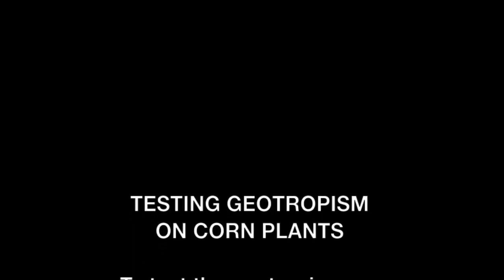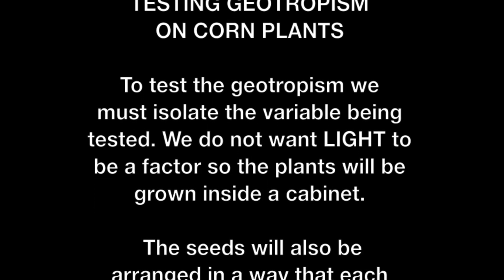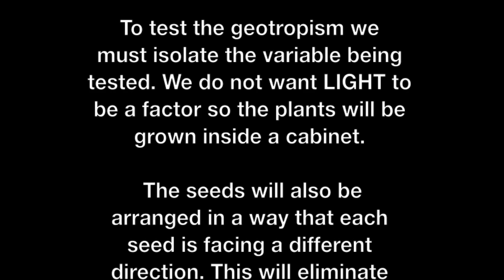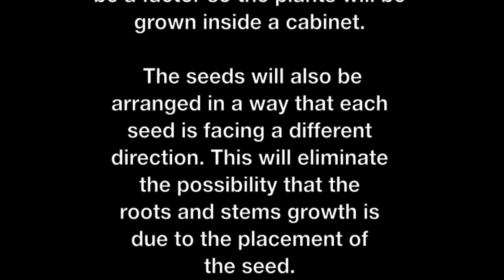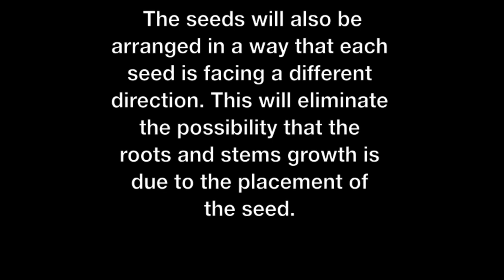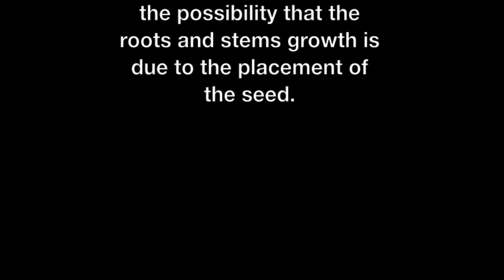To test geotropism on corn plants, we must isolate the variable being tested. We do not want light to be a factor, so the plants will be grown inside a cabinet. The seeds will also be arranged so that each seed is facing a different direction. This will eliminate the possibility that the roots and stems growth is due to the placement of the seed.